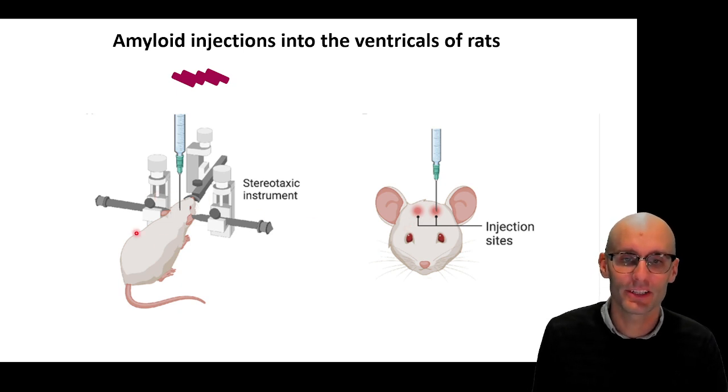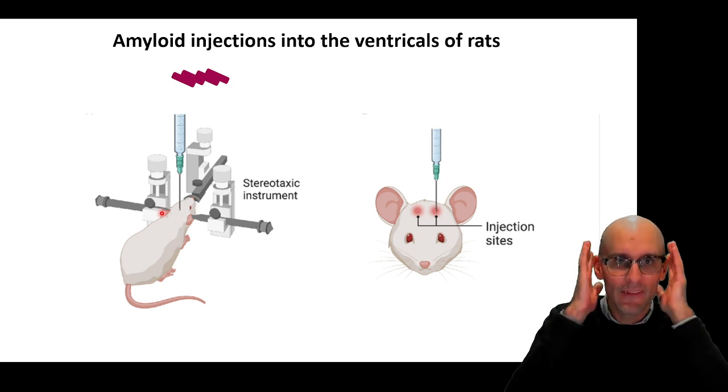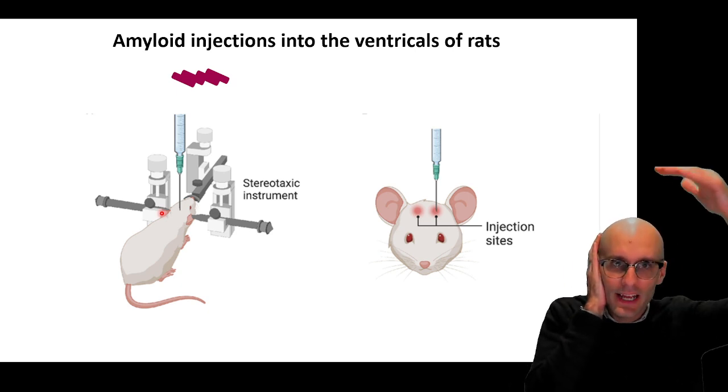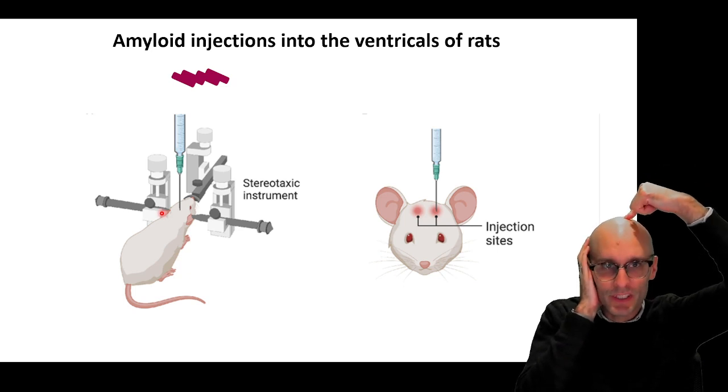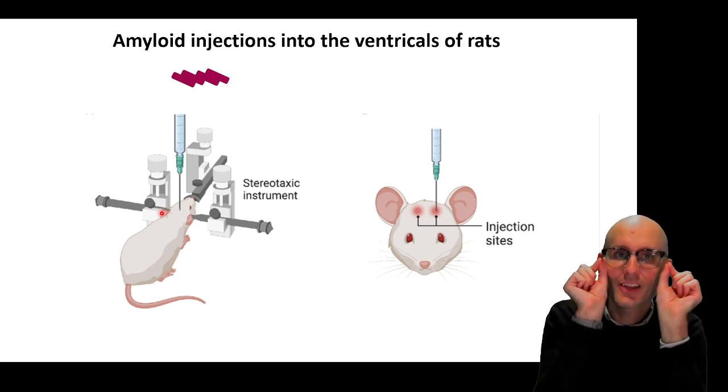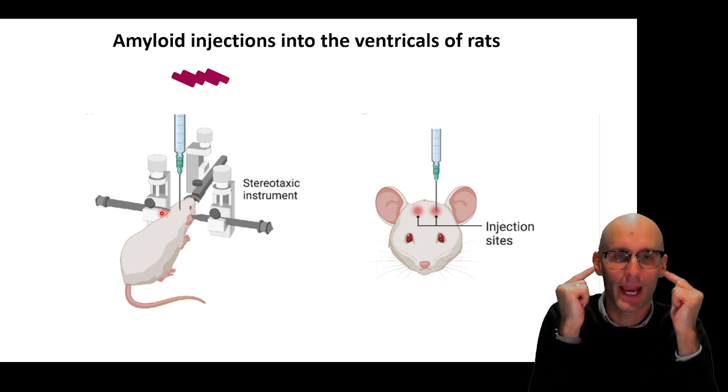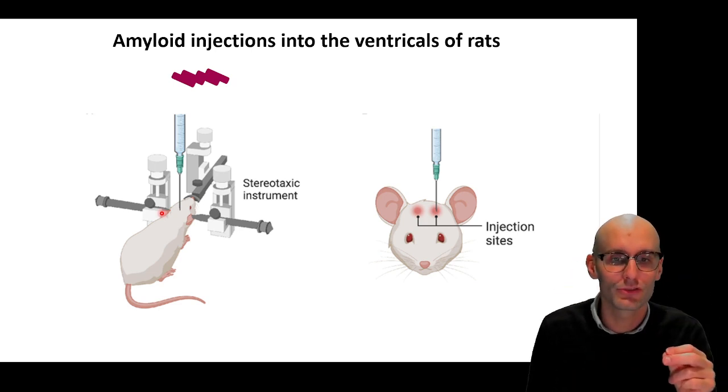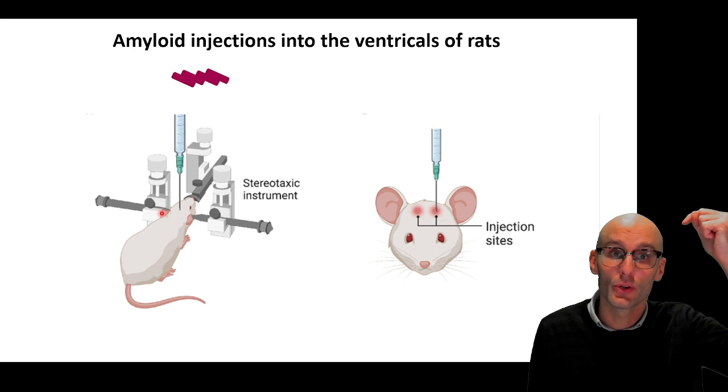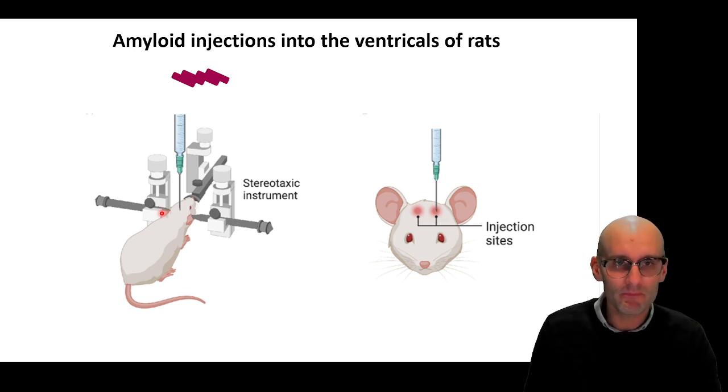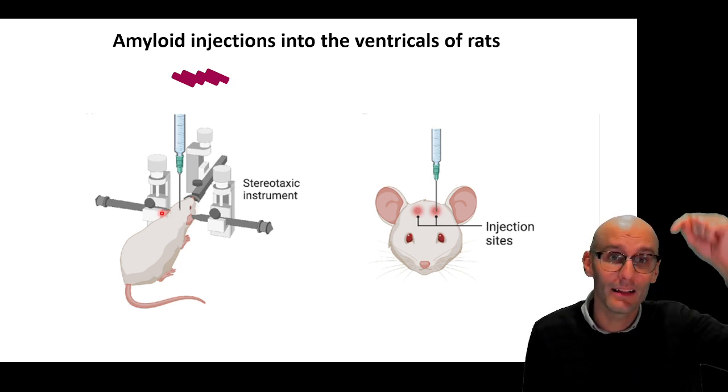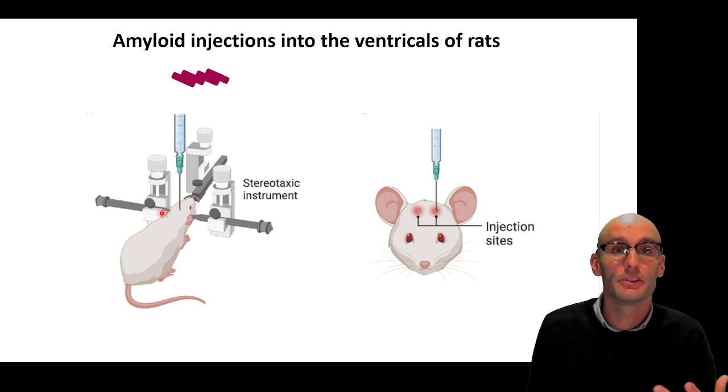So to do this, we do stereotactic surgery, which is where we essentially, under anesthesia, lock the rat into a grid. So then we can exactly precision a needle into a specific location to hit these tiny ventricles in the brain. So we need to use these precision instruments in order to do an injection at a very specific location in the brain within the rat. Now we have to drill a small hole in the skull before we lower this needle down to inject it.